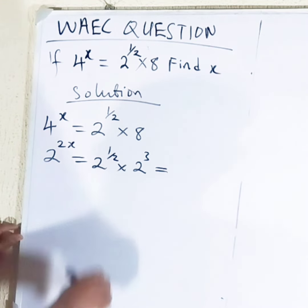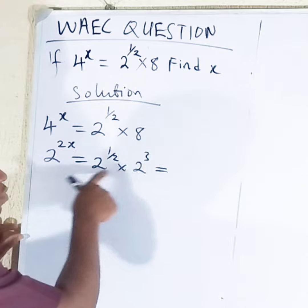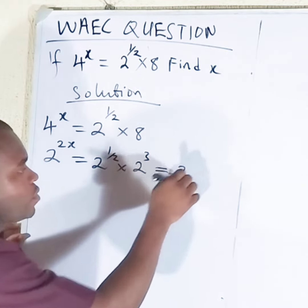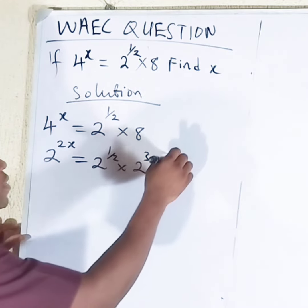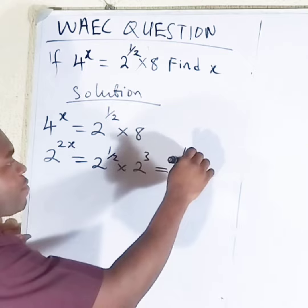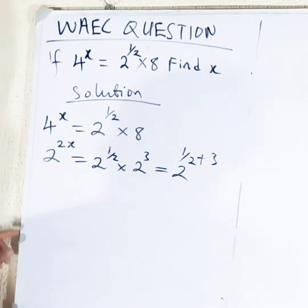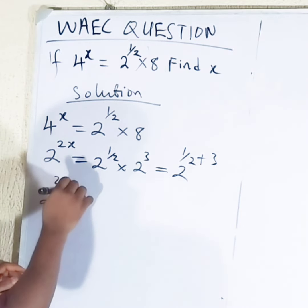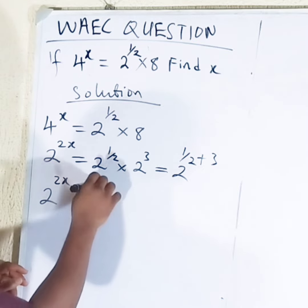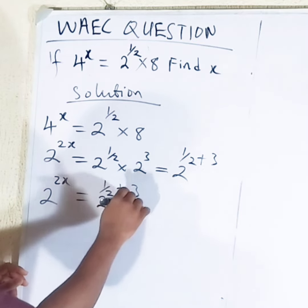Then this is equal to 2 times 2. So the bases are 2, then we can add the powers: half plus 3. So we have 2 raised to the power 2x is equal to 2 raised to the power half plus 3.